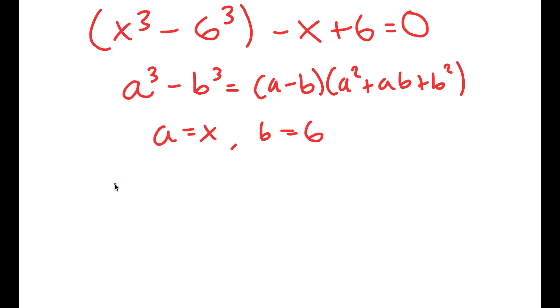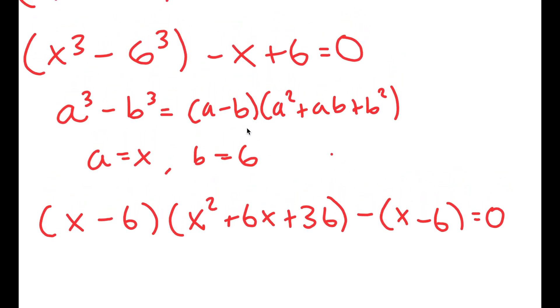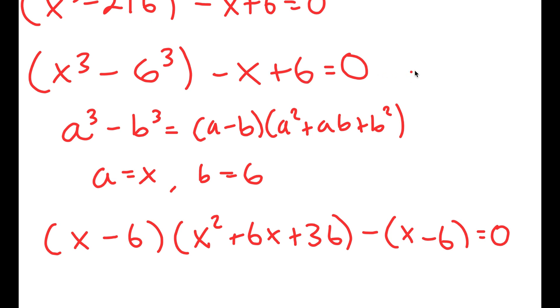So I get x minus 6 times x squared plus 6x plus 36. And we can't forget that we have minus x minus 6 at the end. Negative x plus 6 is the same thing as negative x minus 6 because you distribute the negative sign.